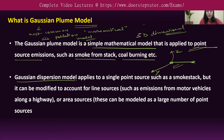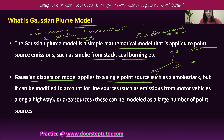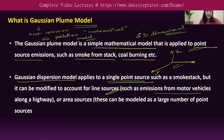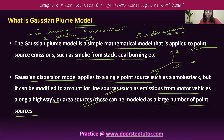The Gaussian dispersion model can be applied to a single point source like a smoke stack, but it can also be modified for line sources — such as emissions from motor vehicles along a highway — or area sources, which are large numbers of point sources. However, in this video we will focus on the Gaussian plume model specifically for point sources.